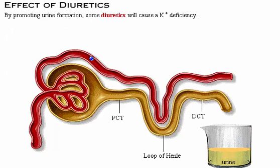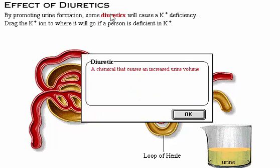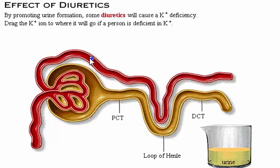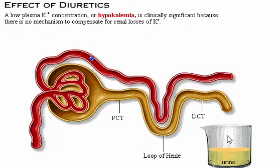By promoting urine formation, some diuretics will cause a potassium deficiency. Potassium deficiency cannot be corrected without ingesting additional potassium. One reason why hypokalemia — a low plasma potassium concentration — is clinically significant is because there is no mechanism to compensate for renal losses of potassium.